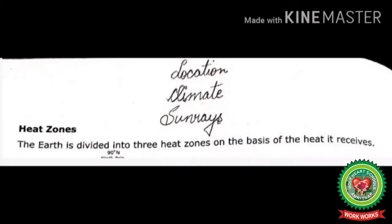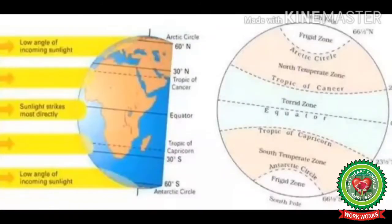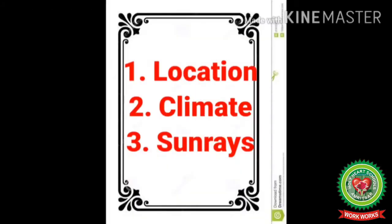The earth is divided into three heat zones on the basis of the heat it receives: the torrid zone, temperate zone, and frigid zone. I am going to discuss all the heat zones on the basis of three points: location, climate, and sun rays.